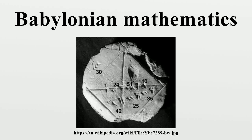Babylonian mathematics was any mathematics developed or practiced by the people of Mesopotamia, from the days of the early Sumerians to the fall of Babylon in 539 BC. Babylonian mathematical texts are plentiful and well edited. In respect of time they fall in two distinct groups: one from the old Babylonian period, the other mainly Seleucid from the last three or four centuries BC. In respect of content there is scarcely any difference between the two groups of texts. Thus Babylonian mathematics remained constant, in character and content, for nearly two millennia.